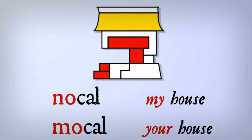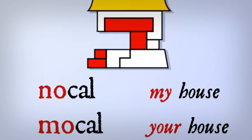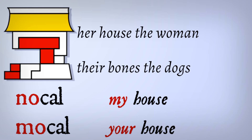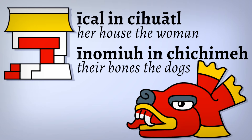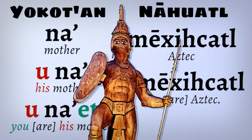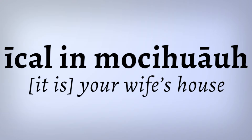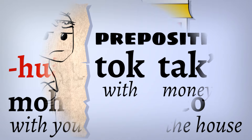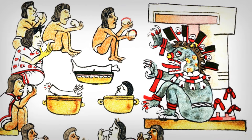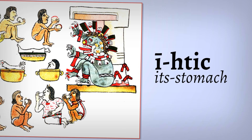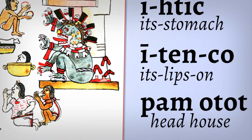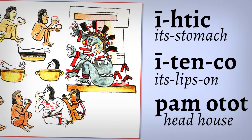And those possessives come back full force with the kind of awkward Mesoamerican way of saying that somebody owns something. It's like this: 'her house, the woman'; 'their bones, the dogs'. In Aztec, you'd say 'I cal in siuatl', 'I nomiu in chichime'. But it works the same way all over. That core-words-build-sentences concept from earlier comes back here too. So have fun with examples like 'I cal in mo siuatl'. Back to Mesoamerican postpositions and prepositions — those time-space references love to include body parts. Instead of saying 'inside', say 'itic' — its stomach. For 'around', use 'itenco' — on its lips.